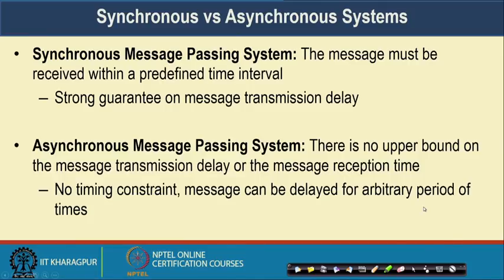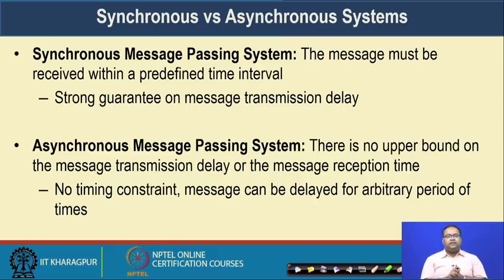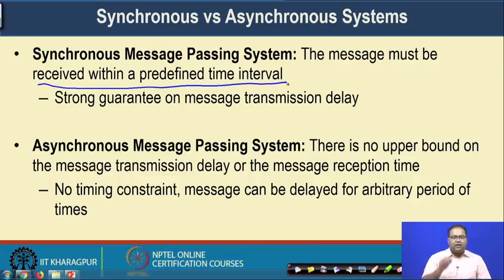While dealing with consensus, we consider two different types of message passing systems. One is called the synchronous message passing system and the second is the asynchronous message passing system. In a synchronous message passing system, the message must be received within a predefined time interval. We have a strong guarantee on the message passing delay and you know a priori what the maximum delay of message passing for this network can be. This kind of synchronicity gives you a simplification in designing the protocol — you can wait for a duration equal to the maximum bound on the message delay, and it is guaranteed that you will receive all the messages within that time.